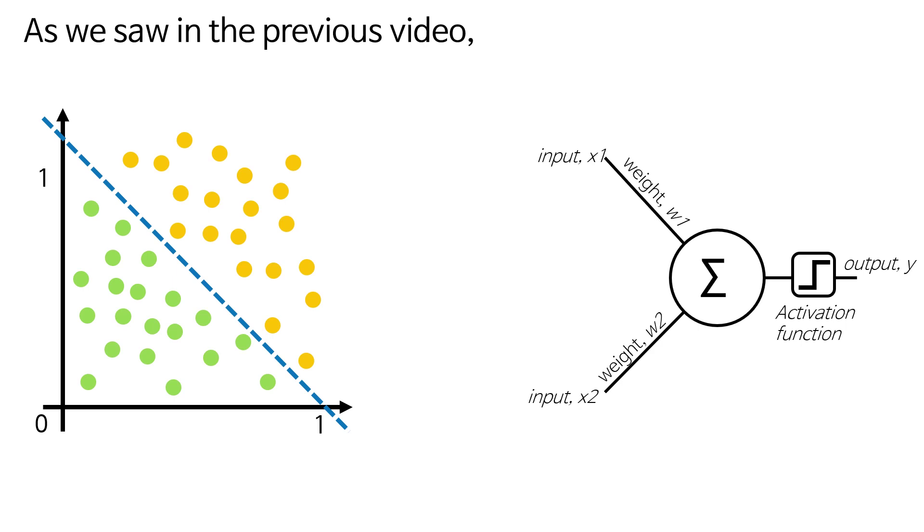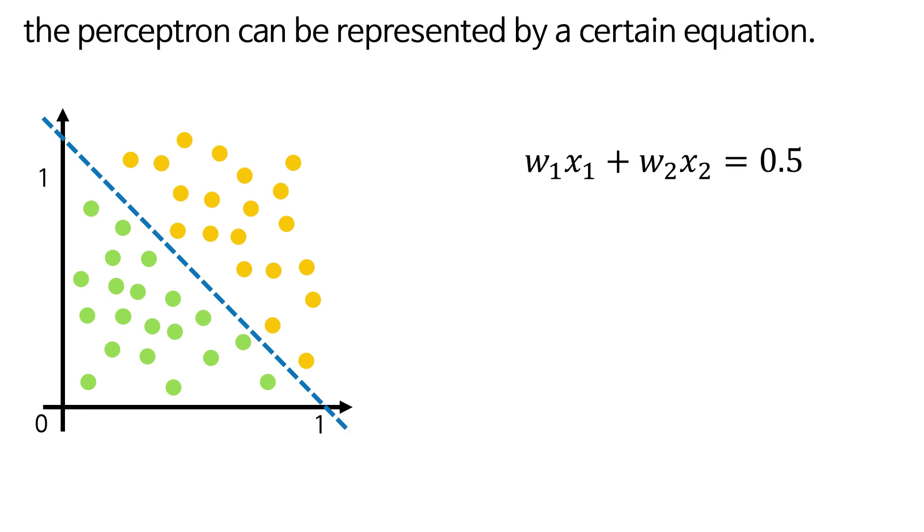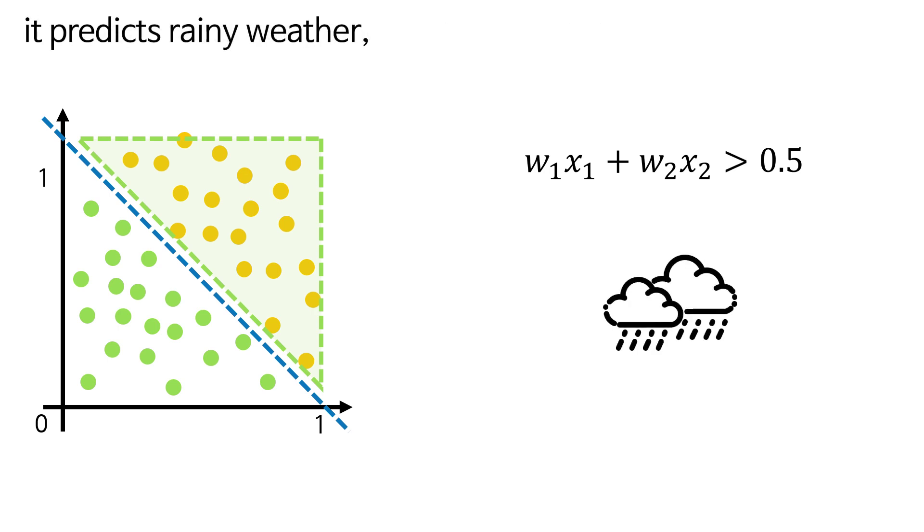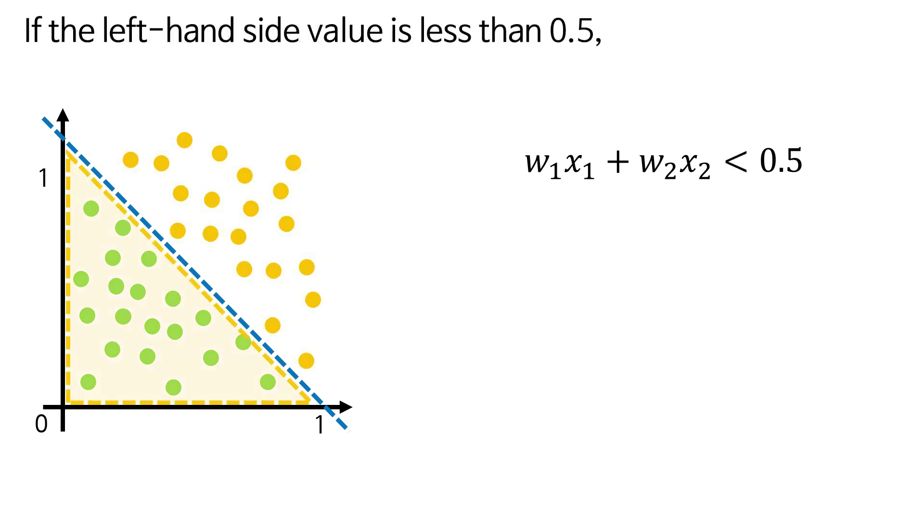As we saw in the previous video, the Perceptron can be represented by a certain equation. If the left-hand side value is greater than 0.5, it predicts rainy weather, and if the left-hand side value is less than 0.5, it predicts clear weather.